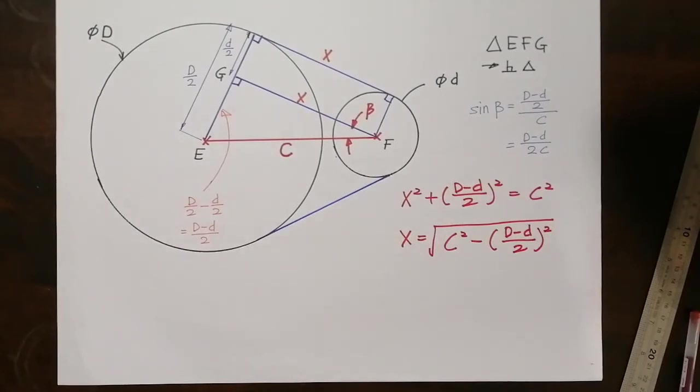Now we are able to find the length, I mean the X, the straight line X. And also we know how to find the angle of the triangle inside the pulley.